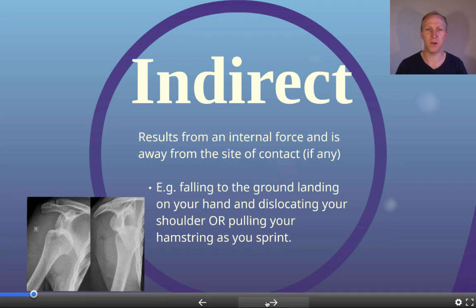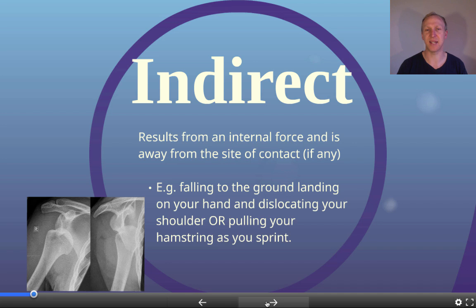Indirect injuries result from an internal force and are normally away from the site of contact. For example, if I fall over and land on my hand but injure my shoulder, that's an indirect injury because the ground is making contact with my hand and the force travels up my arm to the shoulder. Another example is forces developed by your own muscles, such as pulling your hamstring while sprinting.